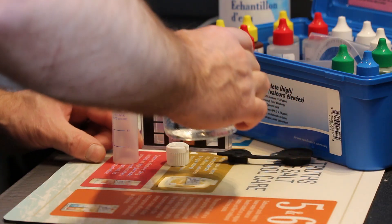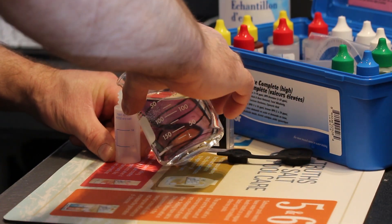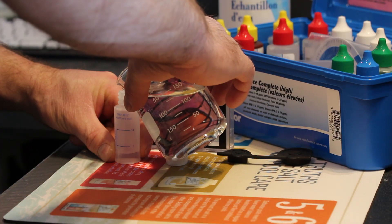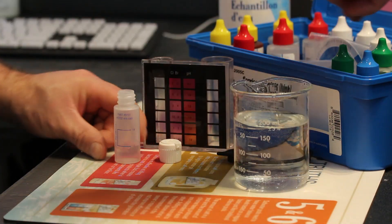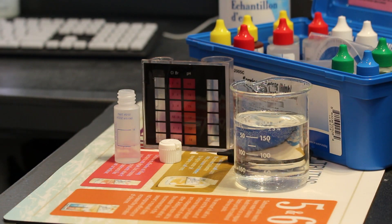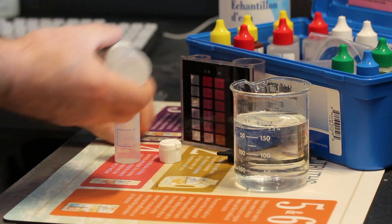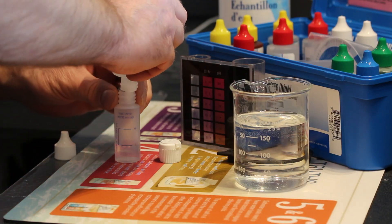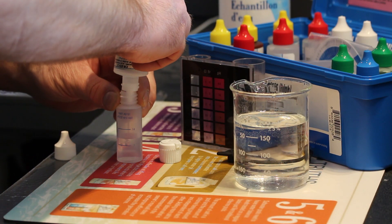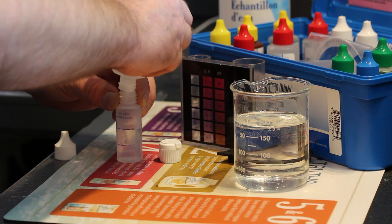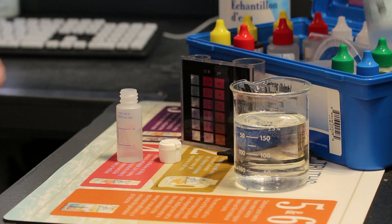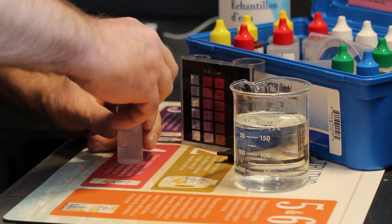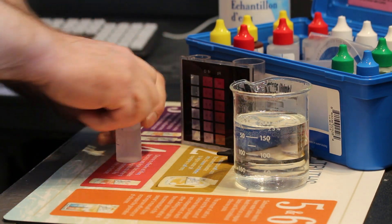To test cyanuric acid, rinse then fill the cyanuric acid testing bottle to the 7 milliliter mark with your pool water. Then add reagent number 13 to the 14 milliliter mark. Cap and mix for 30 seconds.